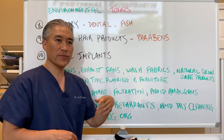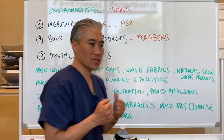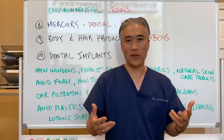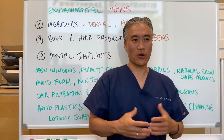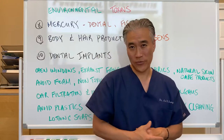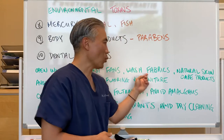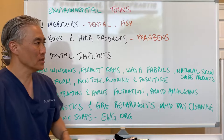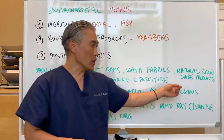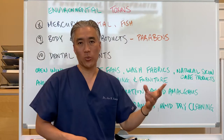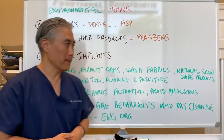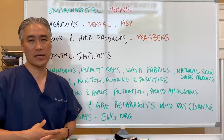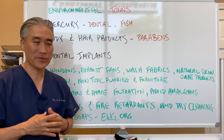Wash your fabrics, especially those things that you never have to iron, or carpeting that you can wash if you can. You want to wash those fabrics to get rid of some of these environmental toxins. You also want to use natural skincare products whenever possible, since a lot of commercial skincare products have a lot of different chemicals in them.